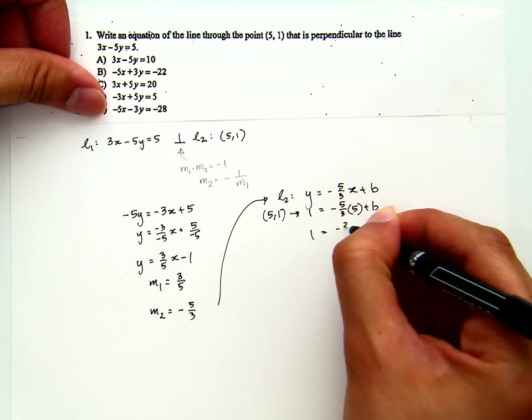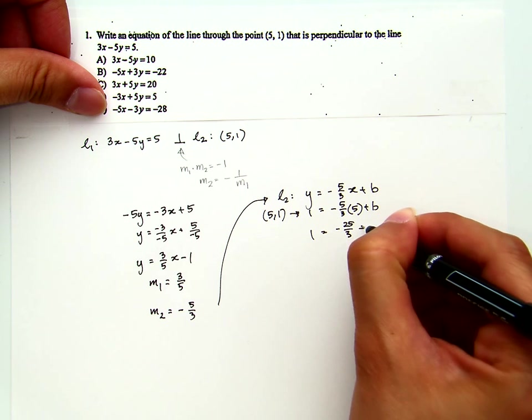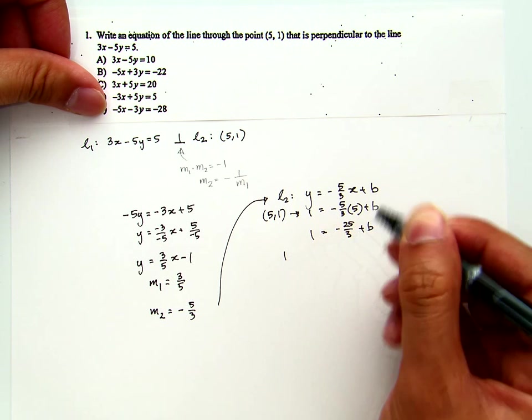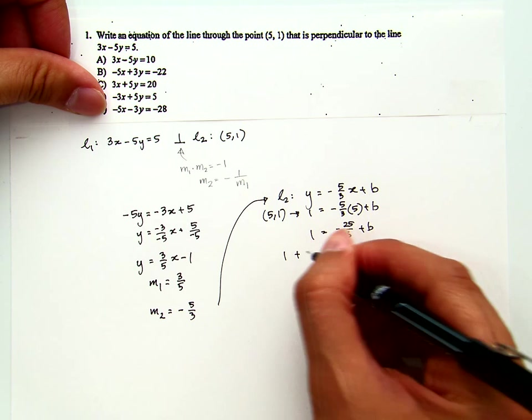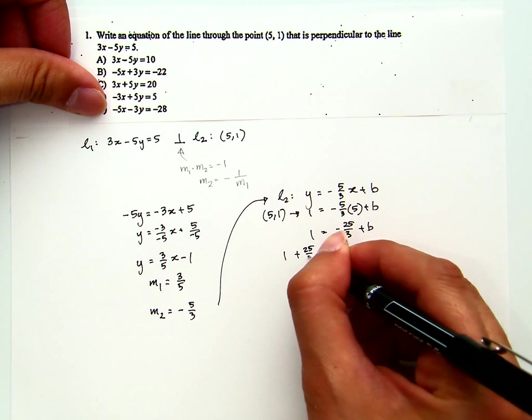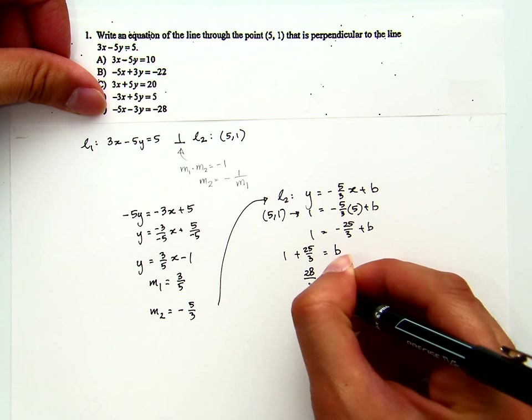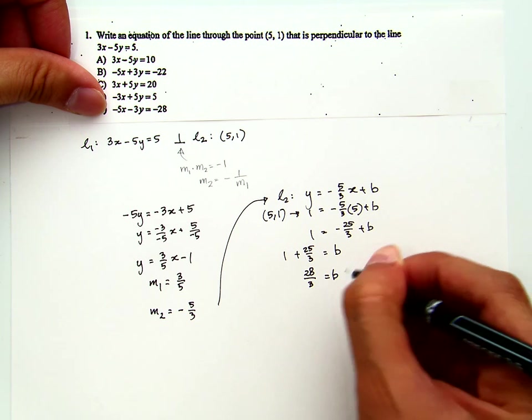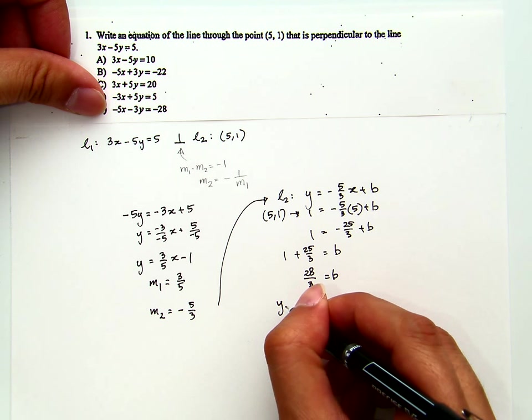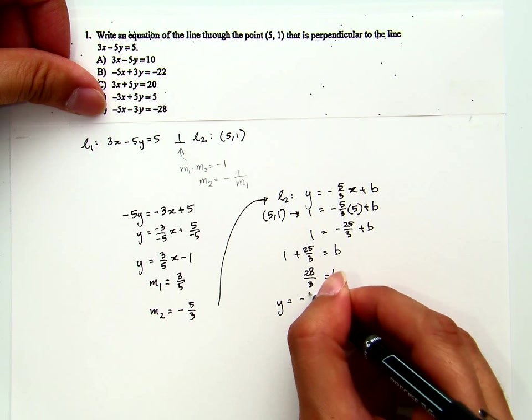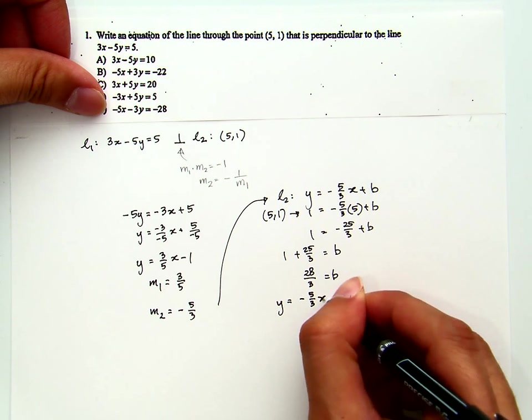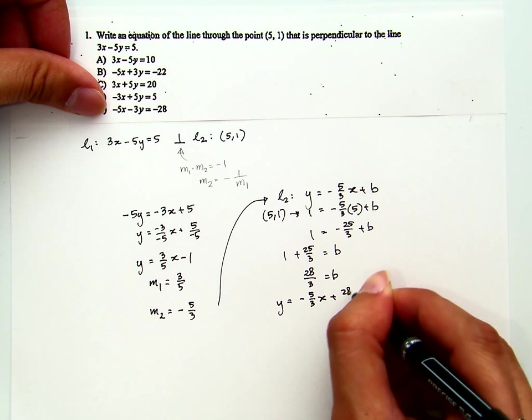This is negative 25 over 3 plus b, move it to the other side. Do the LCD thing and you get this. Therefore, the equation of line 2 is given by y equals negative 5 over 3x plus 28 over 3.